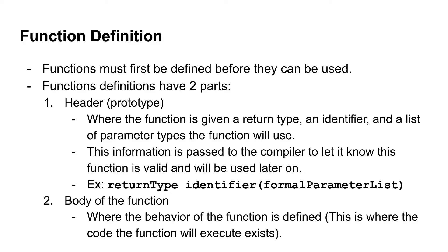So how do we define a function? We start with a header, also known as a prototype. This header is where we give a function a return type — and functions always have a return type, though some do not return anything, which we'll look at in a later video. The header also gives that function an identifier, a name to call it by, and a list of parameter types the function will use.